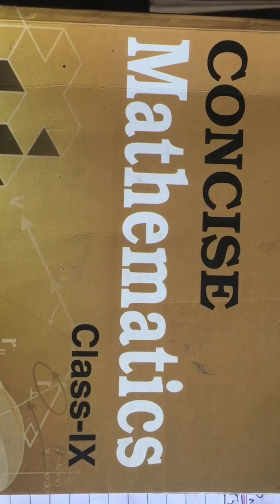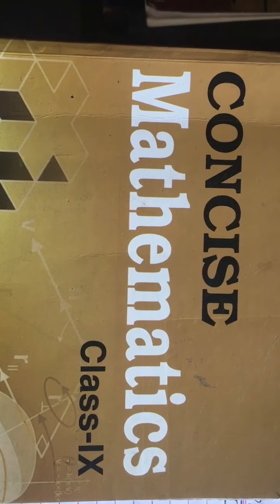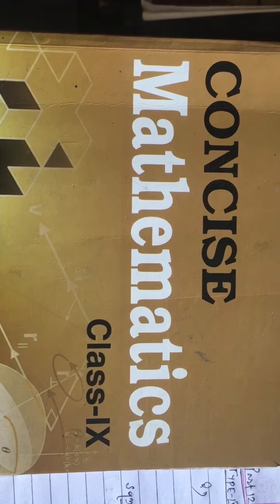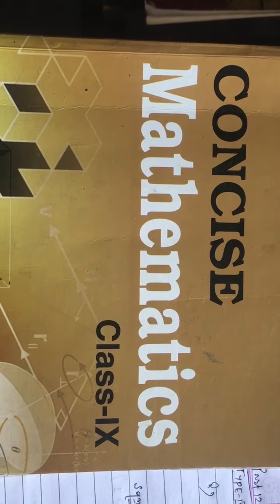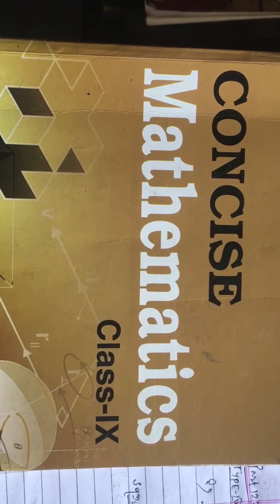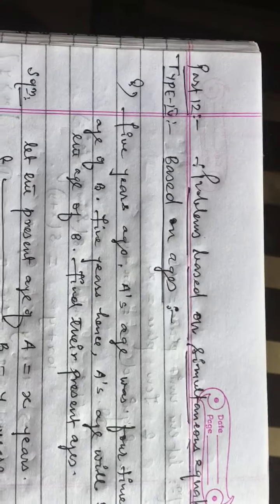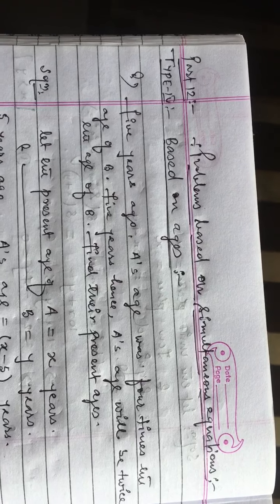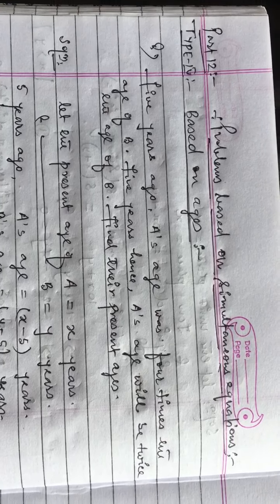Good morning, Standard 9. In the last videos I was explaining Chapter 6: Simultaneous Linear Equations. I already explained the three different methods of solving simultaneous linear equations — elimination method, substitution method, and cross multiplication method. I was also explaining word problems based on simultaneous linear equations. The word problems are categorized into different types: Type 1 is problems based on numbers, Type 2 is problems based on fractions, and Type 3 is problems based on two-digit numbers.